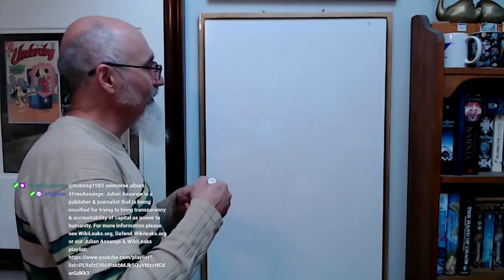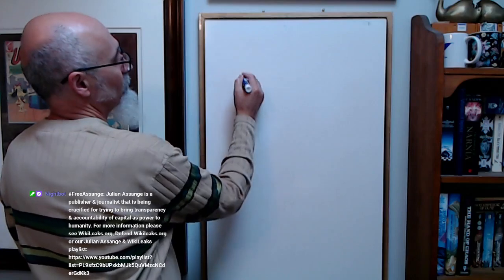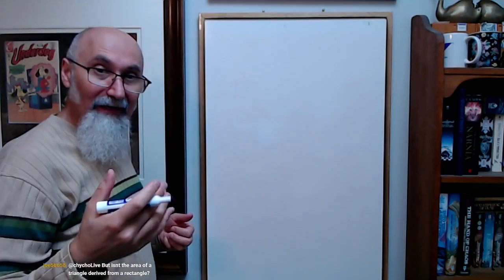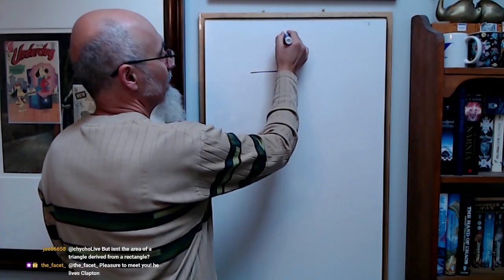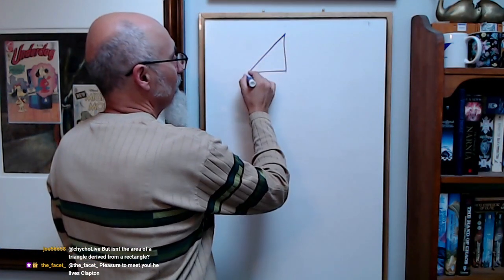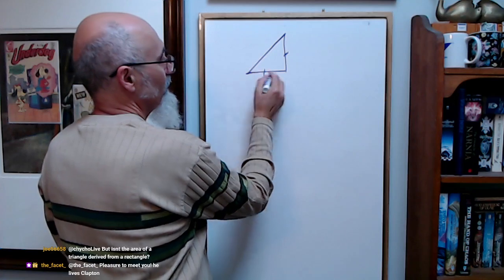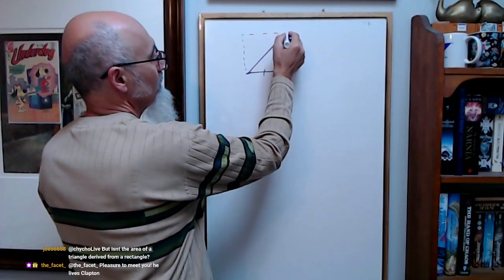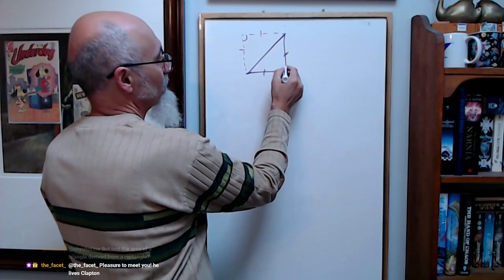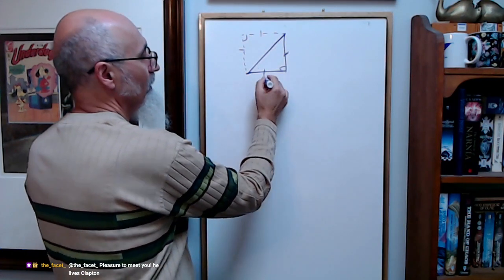Here's a triangle. A triangle doesn't have to be an isosceles triangle. If you have a triangle with two sides the same, you just mirror this along here, you get the same thing. It's a right angle triangle and that's a square, so it's X times X.